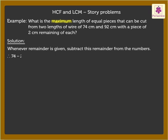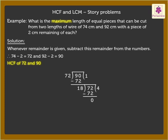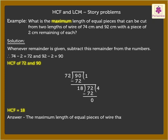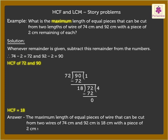Thus, 74 minus 2 equals 72 and 92 minus 2 equals 90. Now, we find the HCF of 72 and 90. So, the maximum length of equal pieces of wire that can be cut from two wires of 74 cm and 92 cm is 18 cm, with a piece of 2 cm remaining.